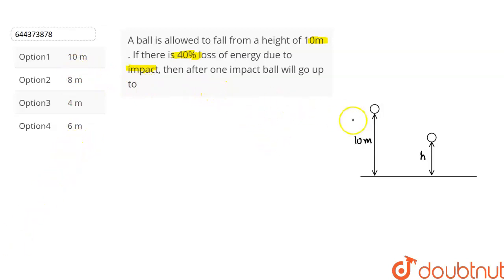To understand this question, let's take the help of this diagram. We can see that this ball is at a height of 10 meters. When it is allowed to fall from the height of 10 meters, it goes and strikes the ground, and after striking the ground, 40% of its energy is lost.